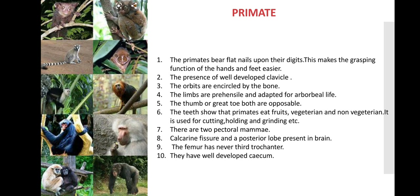The great toe and thumb are both opposable. The teeth show that primates eat fruits, vegetarian or non-vegetarian food, and are used for cutting, holding, and grinding purposes. Teeth are very helpful in understanding what type of food they were eating and the eating habits of the primates. There are two pectoral mammae. The calcarine fissures and posterior lobes are present in the brain. The femur has a third trochanter. They have a well-developed caecum.